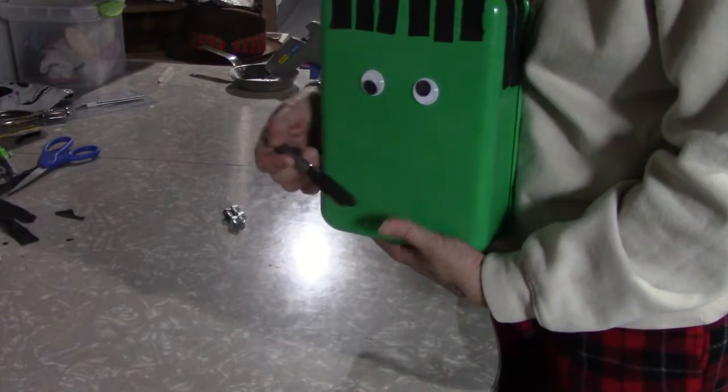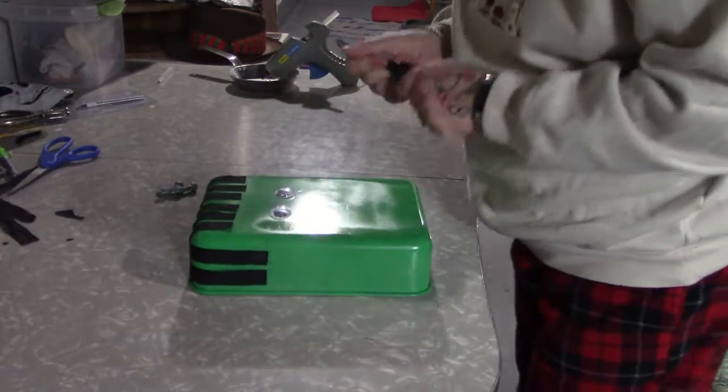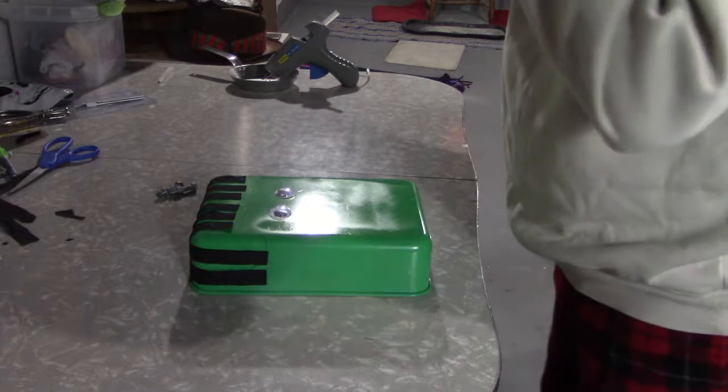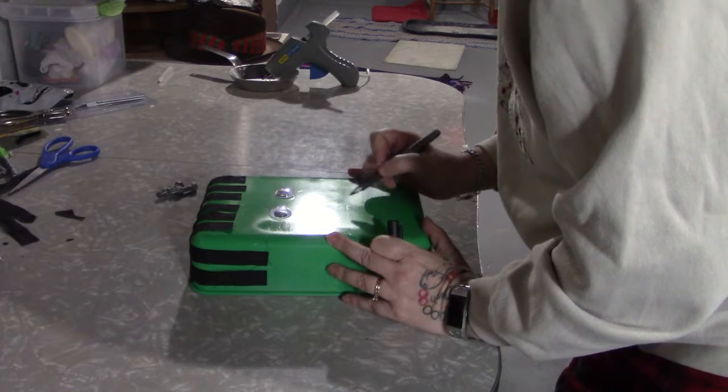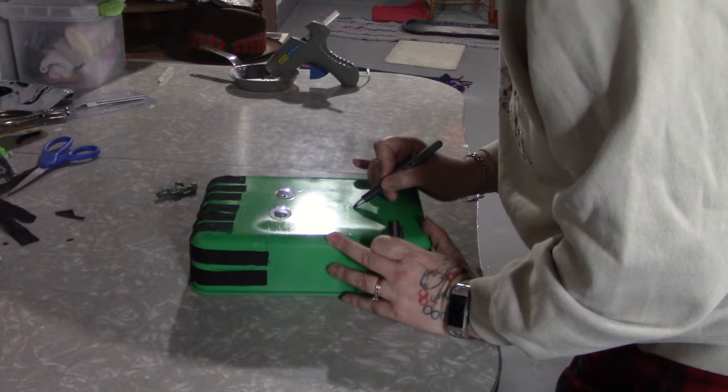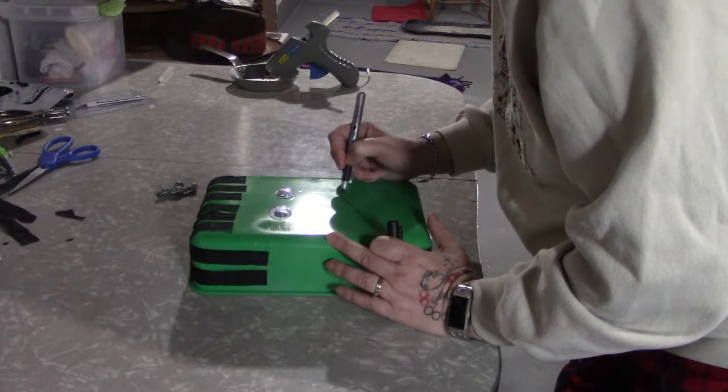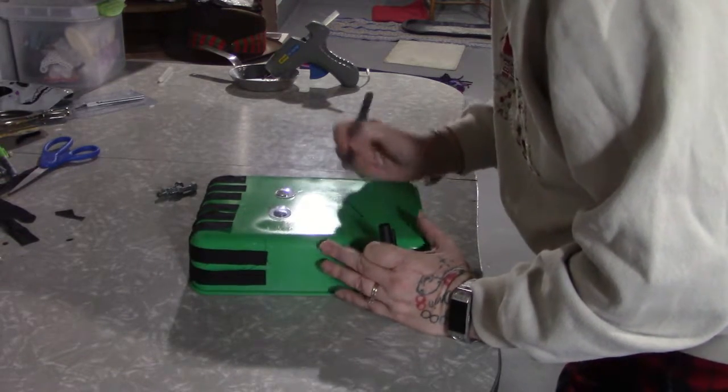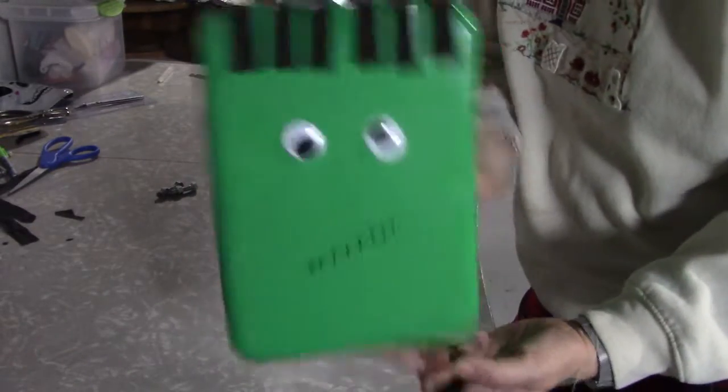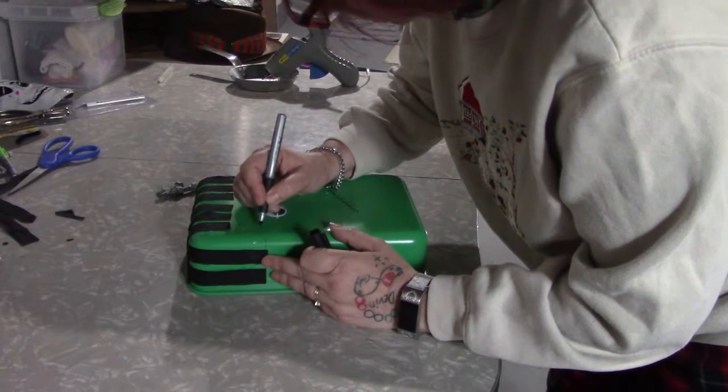All we've got left to do is put his mouth on. So all I'm going to do is simply use a black permanent marker and I'm gonna make a little line. All right, got our mouth on.